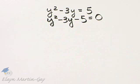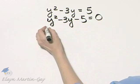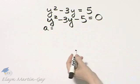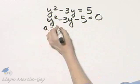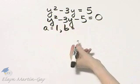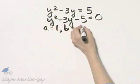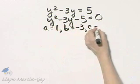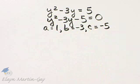And now we're ready for the quadratic formula. Remember, a in the quadratic formula is the coefficient of the squared variable, so a is 1. B is the coefficient of, in this case, y, so b is negative 3, and c is that constant negative 5.